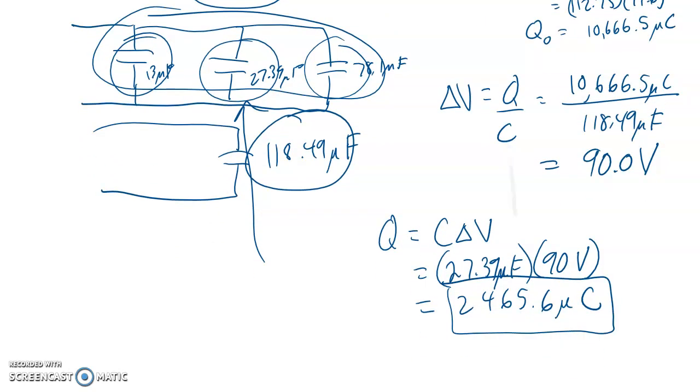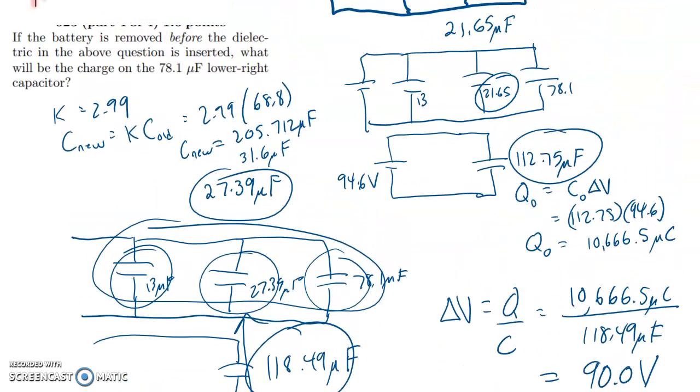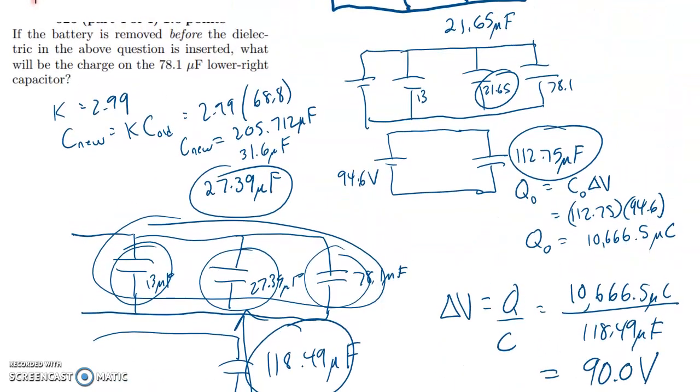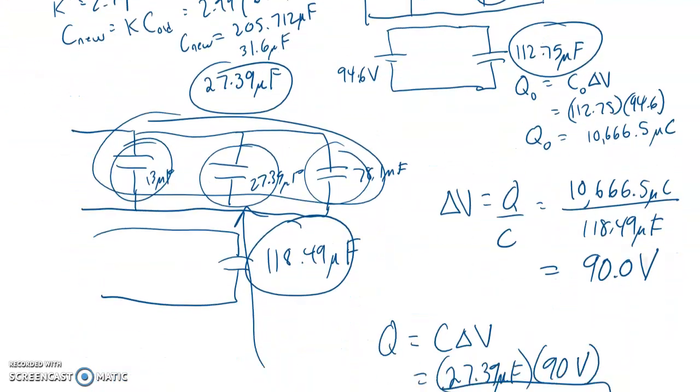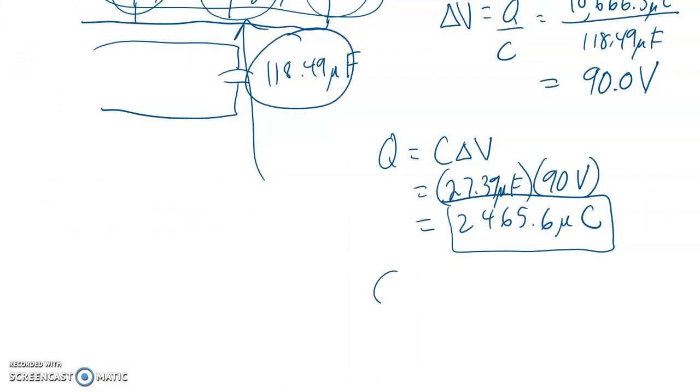And since that represents two capacitors that are in series with each other, that I think is the answer to our question. What was the question that was asked? Oh, no. What will be the charge on the 78.1 microfarad capacitor? All right. Well, okay, I just used the wrong capacitance. So Q equals 78.1 times 90. Everything has that same new voltage of 90 because they're in parallel with each other.